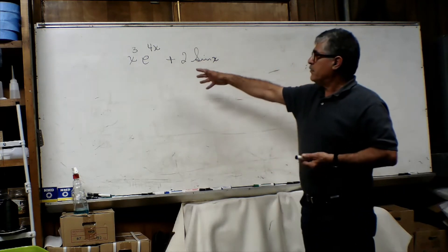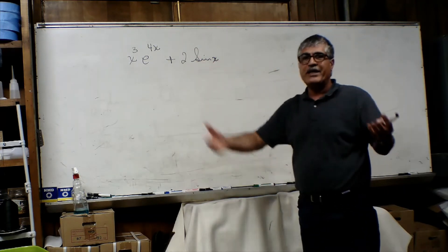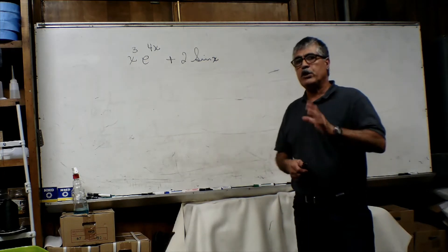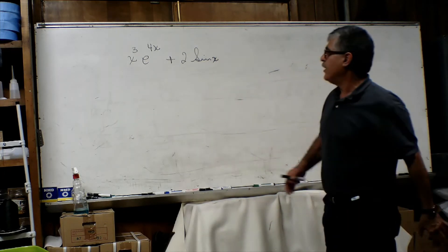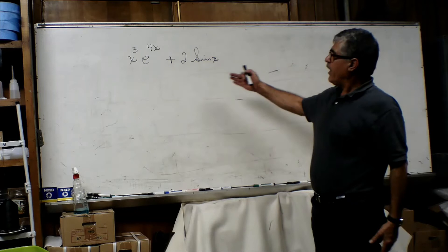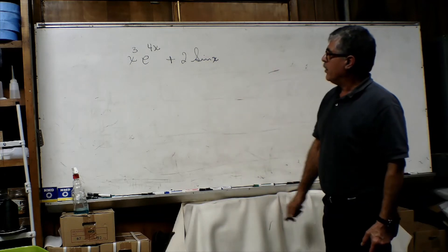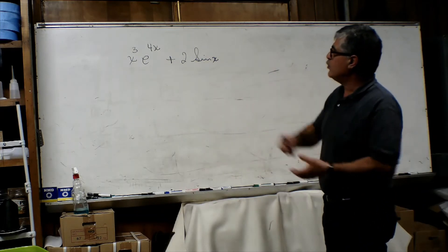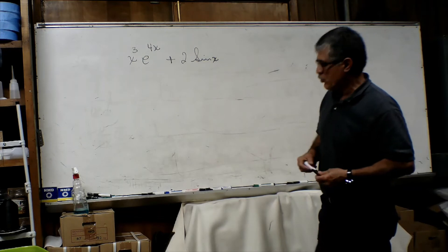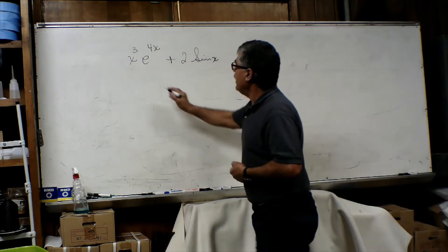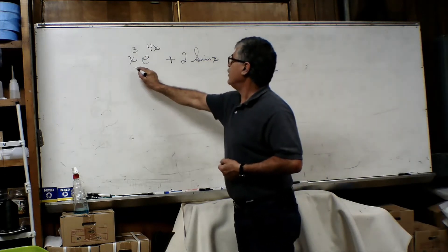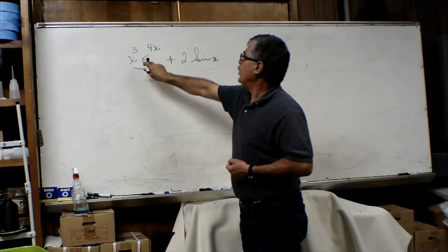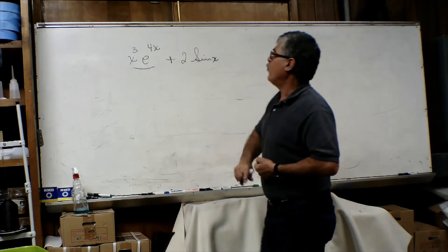Assuming that he does not have a repeated solution in the homogeneous portion, what he has to choose for a particular solution for this non-homogeneous portion: let's start with this portion — we've got x cubed e to the power 4x.